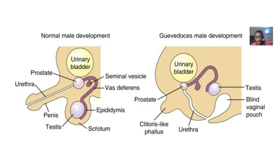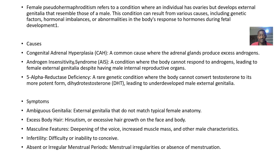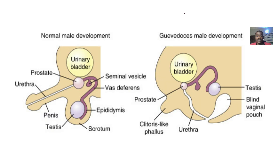For female pseudo-hermaphroditism, it refers to a condition where an individual has ovaries but is now developing some external genitalia that resembles that of a male. I couldn't actually bring all those pictures here because YouTube can ban us for using such sexual images — they don't understand that as medical professionals we actually study these things.